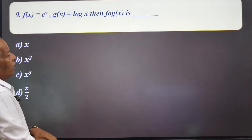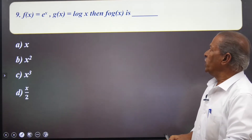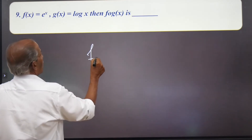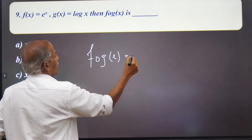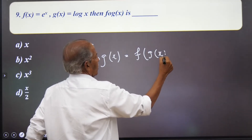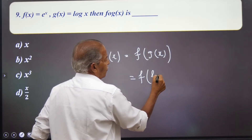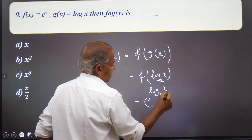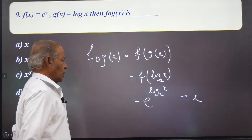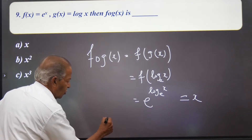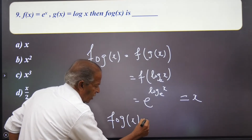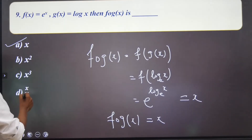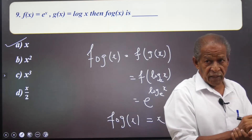For problem 9, f(x) = eˣ and g(x) = log x. Find f∘g(x). f∘g(x) = f(g(x)) = f(log x) = e^(log x) = x. So f∘g(x) = x, and the first option is the correct answer.